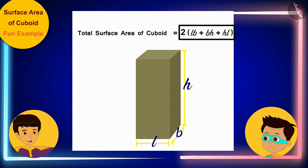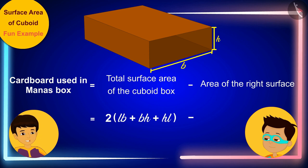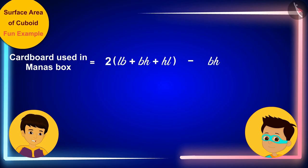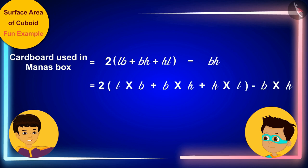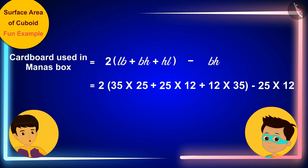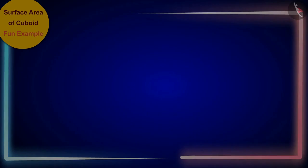The area of the right surface equals height multiplied by width, written as b × h. Substituting the values — length 35 cm, width 25 cm, and height 12 cm — in place of l, b, and h, Manas solves the expression quickly.